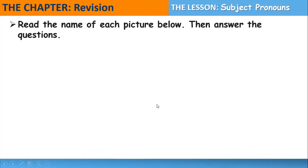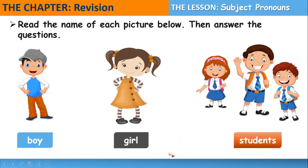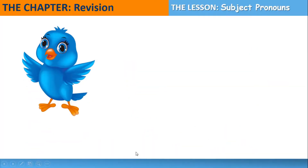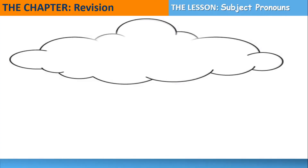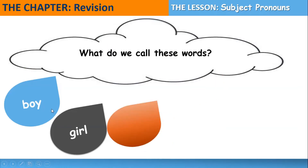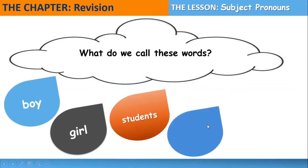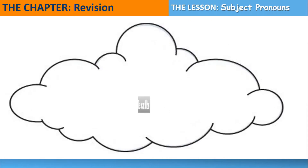Read the name of each picture below, then answer the questions. Boy, girl, students, bird, my mom and I. Now I'm going to ask questions. Are you ready? Listen carefully. What do we call these words? Boy, girl, student, bird, mom. What do we call them? Fantastic! These words are called nouns.